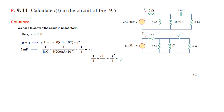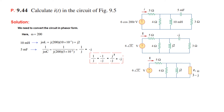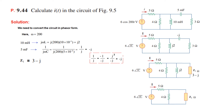We can see these two are in series, so we give them the name Z1 and solve them. Being in series, they just add: 3 plus minus j gives Z1 equal to 3 minus j.